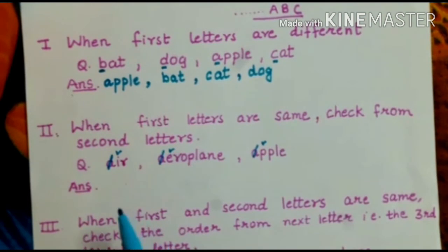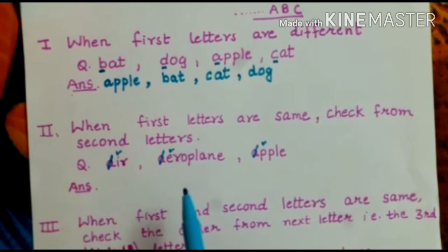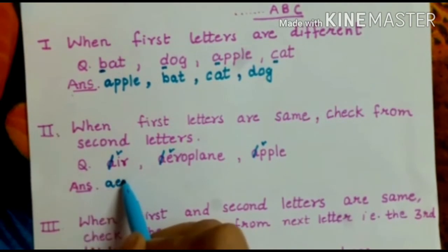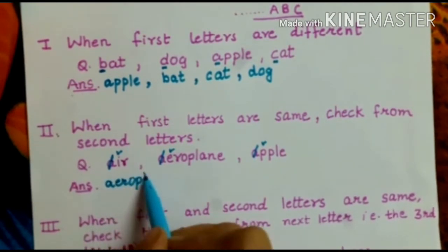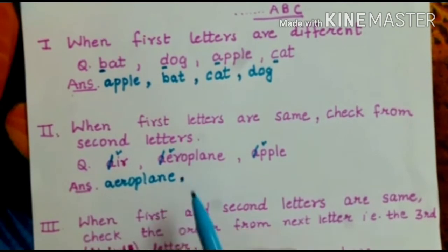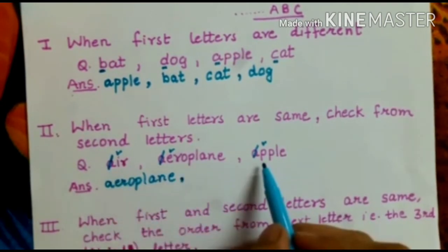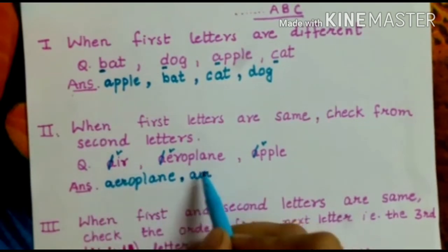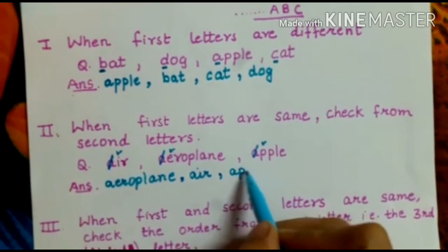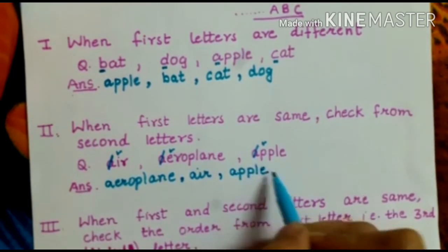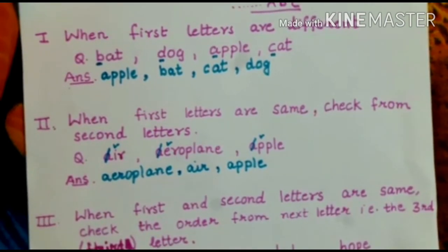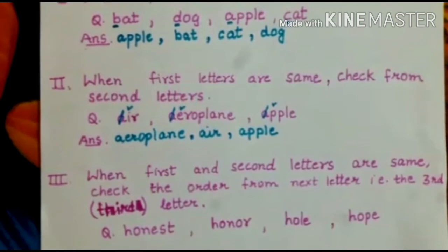Now tell me, which letter will come first — I, E, or P? Yes, E — so we will write down first: aeroplane. And then, out of I and P, I comes before P, so we will write down air. And the last will be apple, as P comes after I. Understood? Okay, fine.